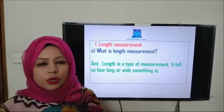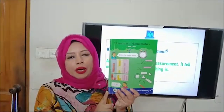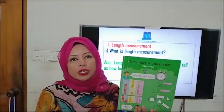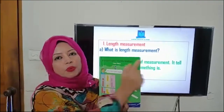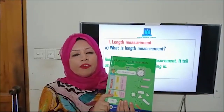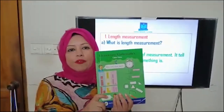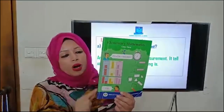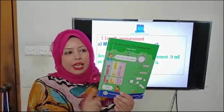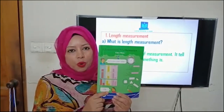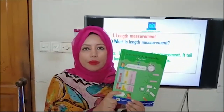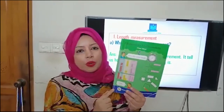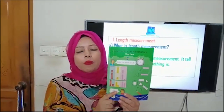Look at your book — there is a book in my hand. If I want to measure this book, I have to tell how long the book is and how wide the book is. This is the example of length measurement. In this measurement, we have to find out the length — how long the book is and how wide the book is. Yes, length measurement will tell us how long and how wide the book is.